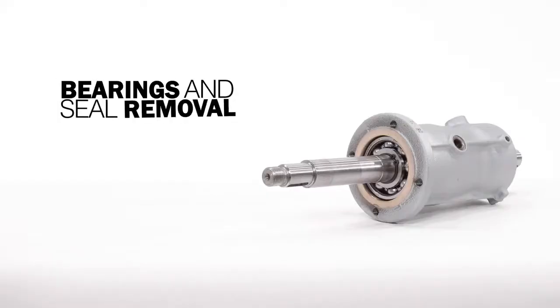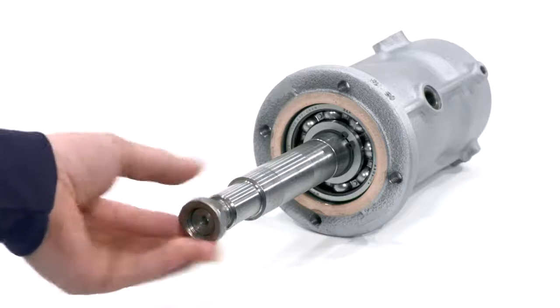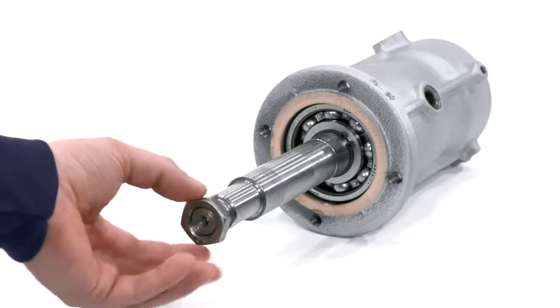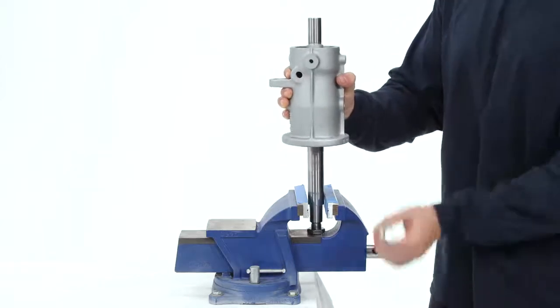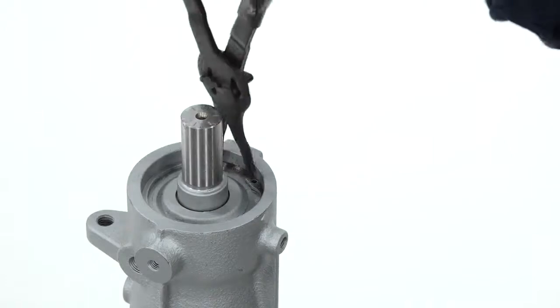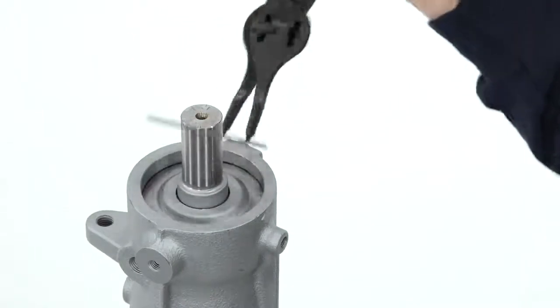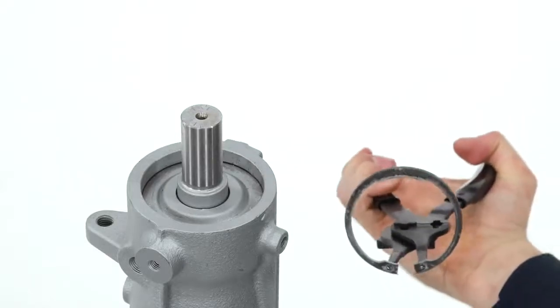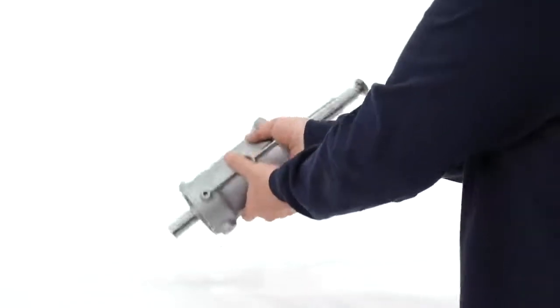Bearings and seal removal: You may wish to add the nut back onto the shaft to protect the threads. Place the shaft and bearing housing vertically in a vise, thread side down. Remove the outer snap ring from the pump drive shaft at the bearing. Flip the housing to remove the nylos ring and spring disc.